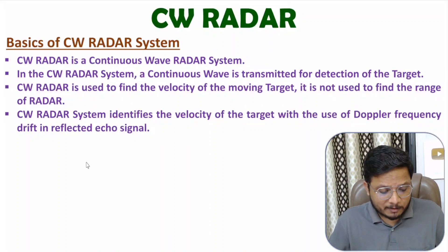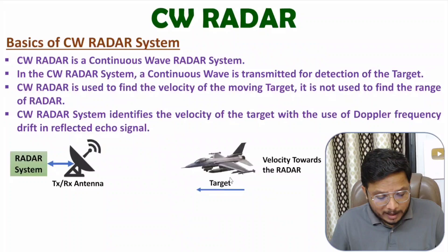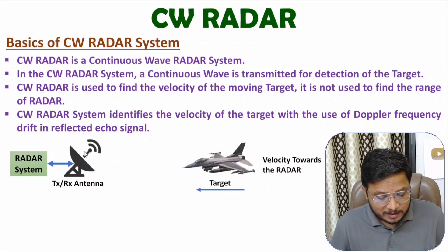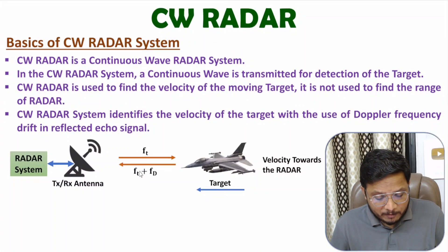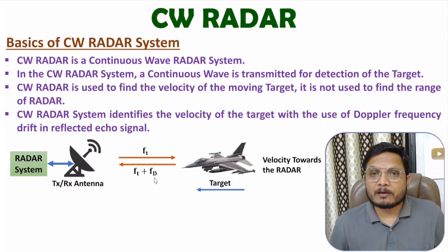Let me explain that again. Here we have a radar system and consider one object moving towards it. As it is moving, it will have some velocity. The radar system is transmitting a signal with frequency FT, and the echo signal will have a frequency drift FD. So the resultant frequency of the echo signal is FT plus FD. Here the frequency drift is positive because the target is moving towards the radar system. If the target is moving away, the frequency will be FT minus FD. So based on the drift in frequency, we can identify velocity.